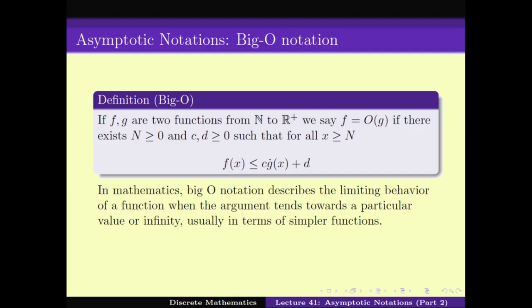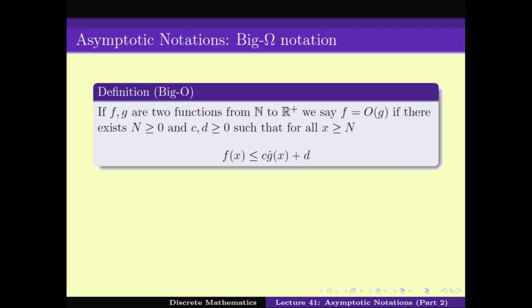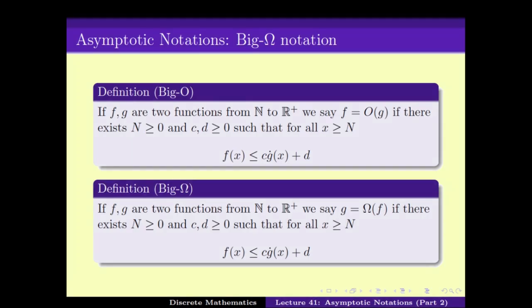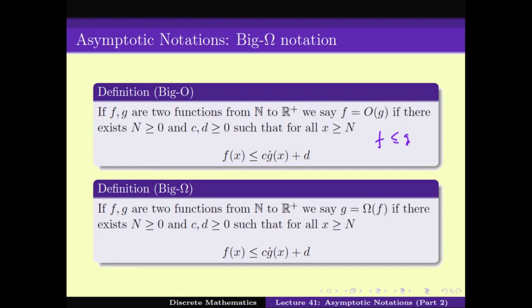Just like Big O, we have the opposite — Big Omega. If f is Big O of g, the other way of writing it is that g is Big Omega of f. This is the same relationship: just like when you say f is less than g, you can also say g is greater than f. Both say the same thing — in one case we use Big O and in one case we use Big Omega.